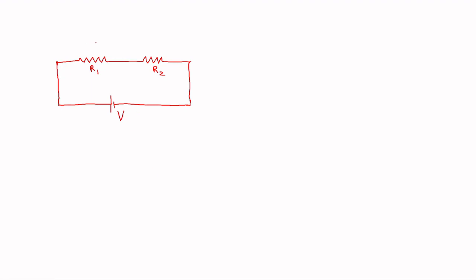To demonstrate voltage division rule, I am taking this simple circuit and now I am going to apply Kirchhoff's voltage law to this loop. The first step is to assume a loop current in a direction, so I am assuming a loop current I in the clockwise direction. Because of this current you will have a potential drop V1 across R1 and potential drop V2 across R2. So the polarities of these voltages can be given now — current entering terminal is positive and current leaving terminal is negative. We have got three potentials now: V1, V2 and V.